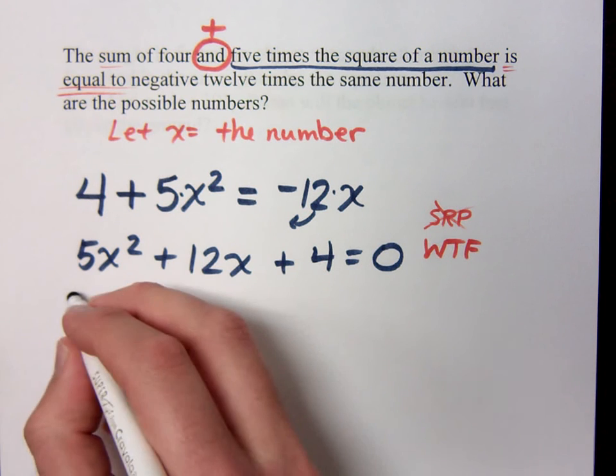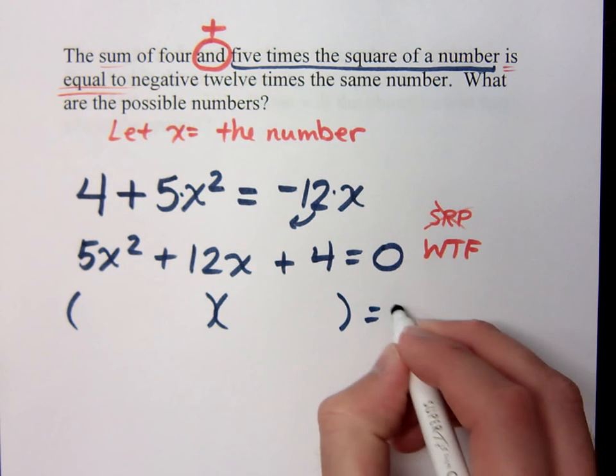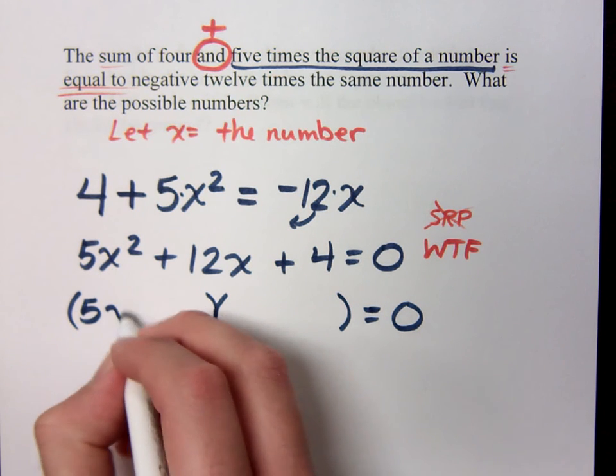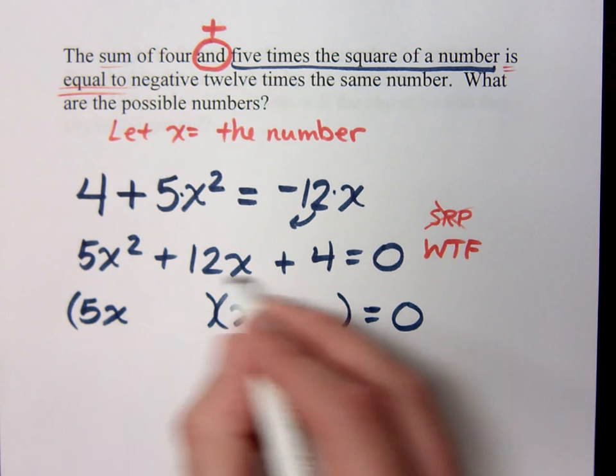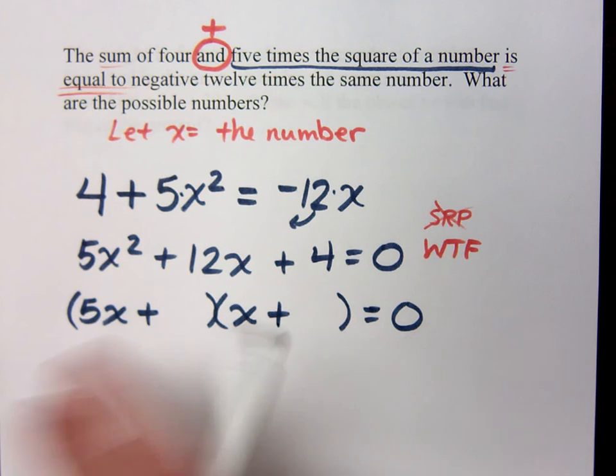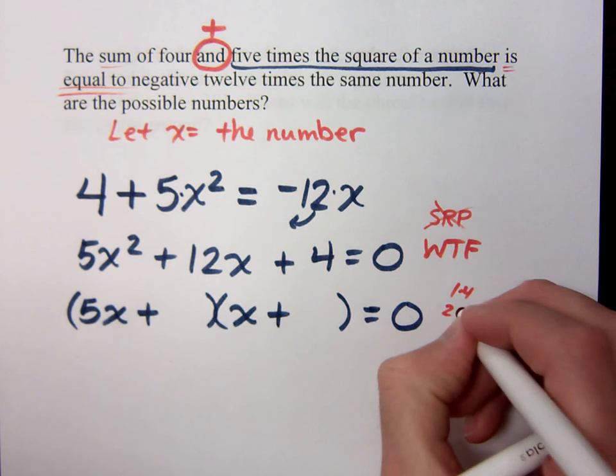Well, let's see if this guy factors. It's a trinomial with no common factor other than 1. 5 is prime, so I know the only way to break down 5x² is 5x and x. Everything here is positive, so that means 2 positives. Look at the factors for 4. The factors for 4 are 1 and 4 or 2 and 2.